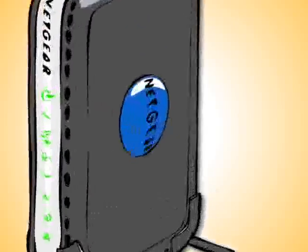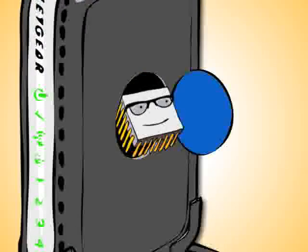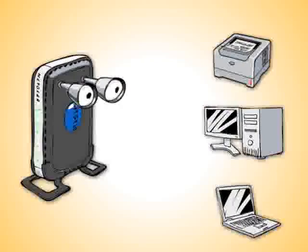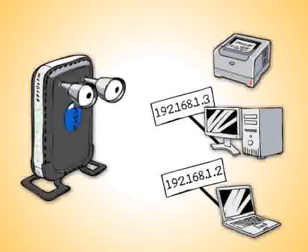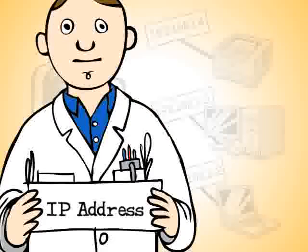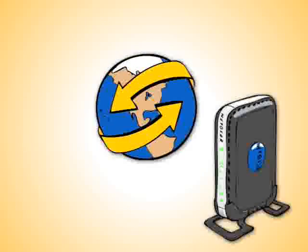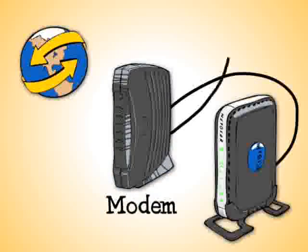Now let's check out each of the components of a wired network in more detail. We'll start with the router. A router has a smart little computer inside that identifies all of the computers and devices on your network and assigns a unique number to each one. Techie people call this an IP address. A router also connects to the internet outside your home via a modem that can be provided by your DSL or cable internet provider.